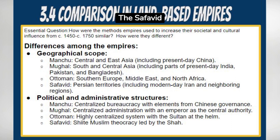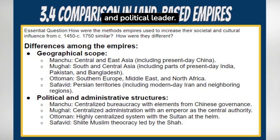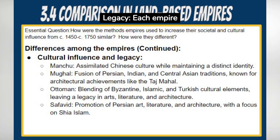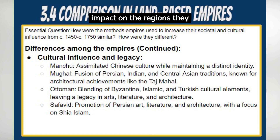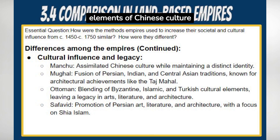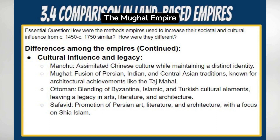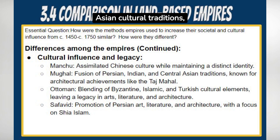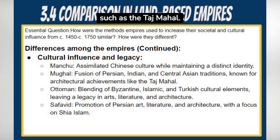The Safavid Empire followed a Shiite Muslim theocracy, with the Shah serving as both a religious and political leader. Cultural influence and legacy: each empire left a distinct cultural impact on the regions they ruled. The Manchu Empire assimilated some elements of Chinese culture while maintaining their own distinct identity. The Mughal Empire fostered a unique fusion of Persian, Indian, and Central Asian cultural traditions, resulting in magnificent architectural achievements such as the Taj Mahal.